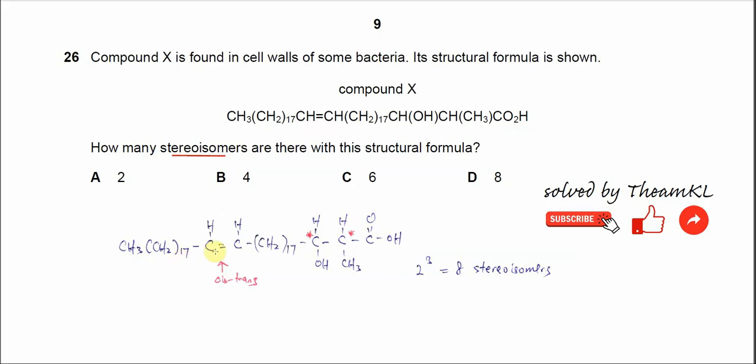And let's check if there are any chiral carbons or not. So for this carbon it has four different groups: one, two, three, four. So this is a chiral carbon, it can form optical isomers.